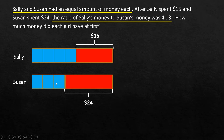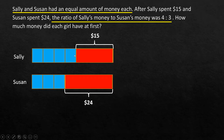Susan should have 3 units. Since these are in a ratio, the unit size of each of Sally's 4 units is the same as the unit size of each of Susan's 3 units. So we can compare them: Sally has 4 units and Susan has 3 units. From the diagram, we have $24 and $15, and the difference — 24 minus 15 — is one unit.